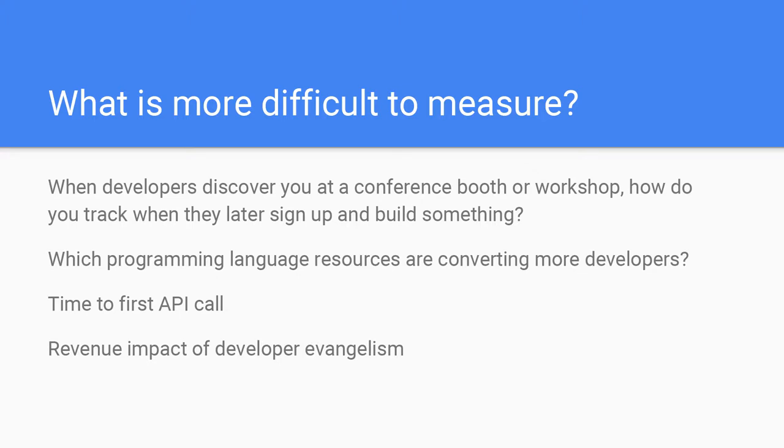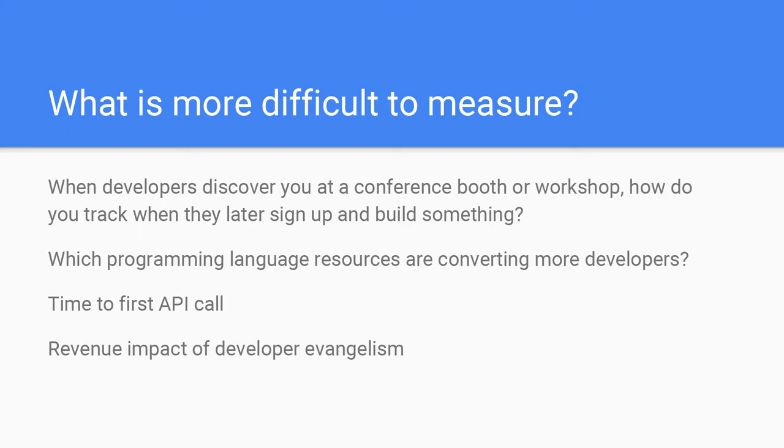Which programming language resources are converting more developers is an interesting question — it gives you insight into your developer community and what languages they're using. It's also great to do a two- to five-year forward look: what are the fastest-growing languages in our field, and are we already building resources for those languages? Time to first API call is really difficult to measure because you're not pair programming with developers to see how quickly they onboard.